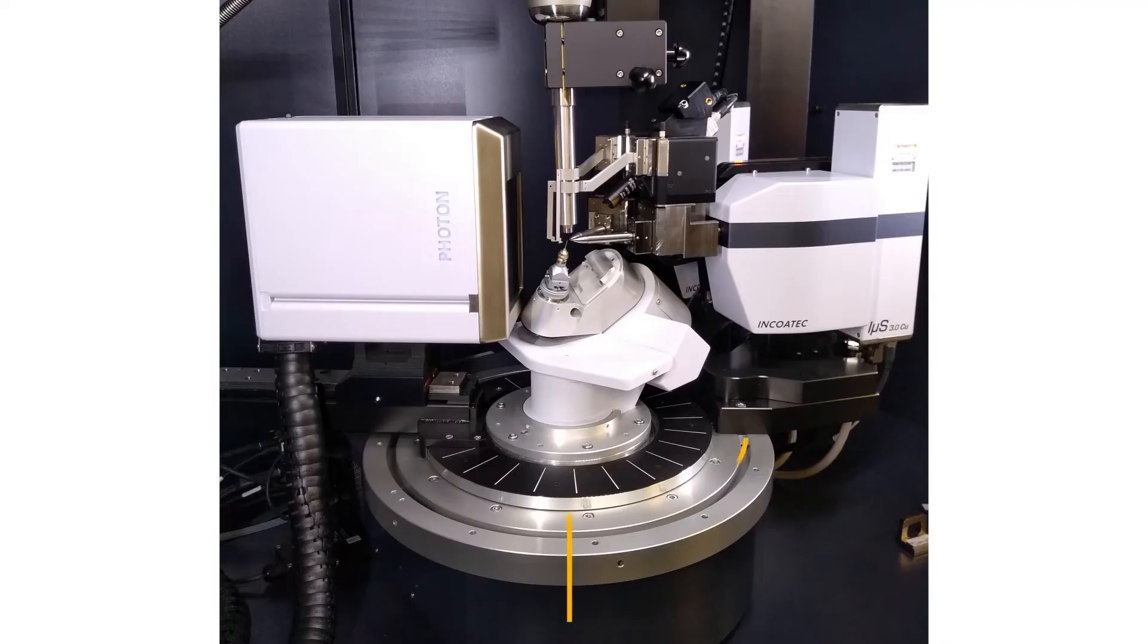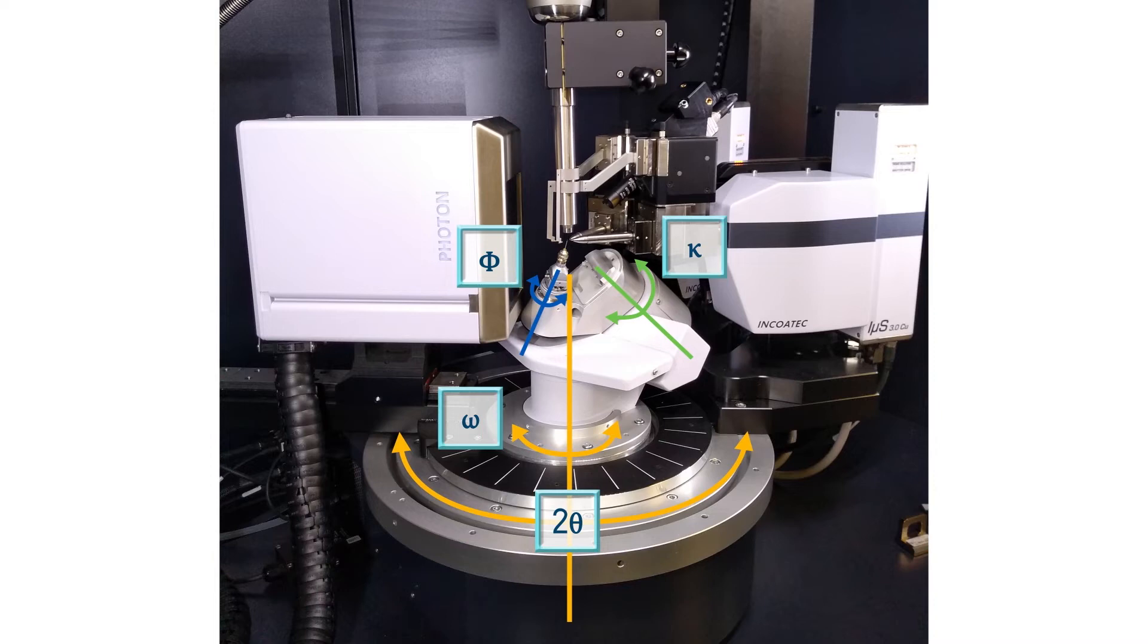The following picture highlights the three possible rotation axes of the goniometer, including theta, phi, and kappa.